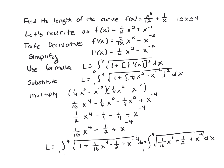Find the length of the curve of f(x) = x³/12 + 1/x, where 1 ≤ x ≤ 4. Let's rewrite this as f(x) = (1/12)x³ + x⁻¹.